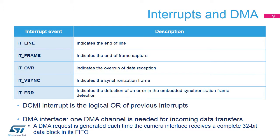Five interrupts are generated, all maskable by software. The global interrupt is the OR of all single interrupts. The DMA interface is active when capture mode is enabled. A DMA request is generated each time the camera interface receives a complete 32-bit data block in its FIFO. For DMA channels available to DCMI, please refer to the DMA section in the STM32H7 reference manual.